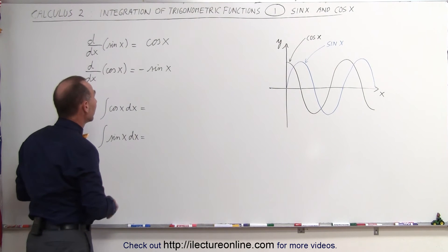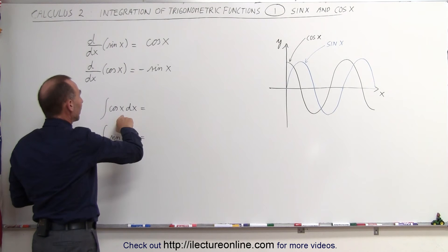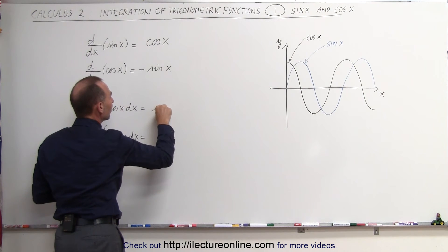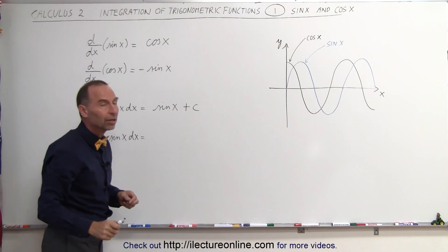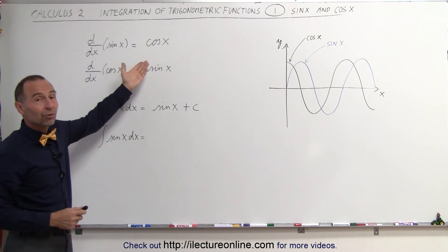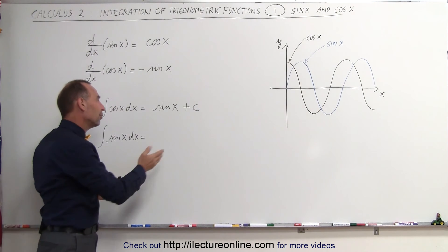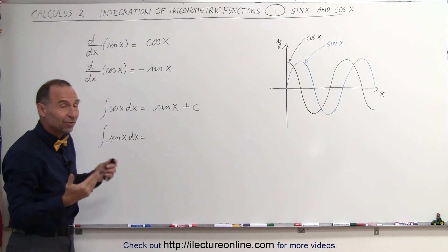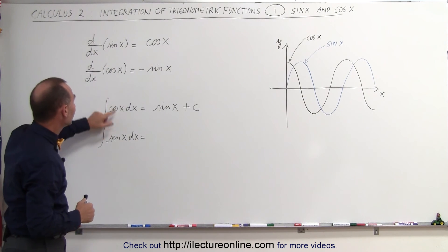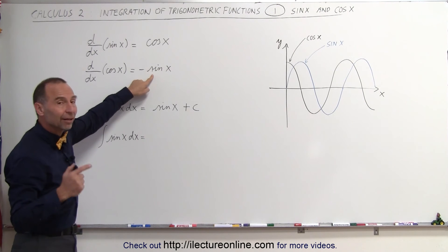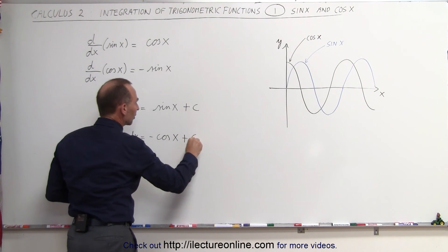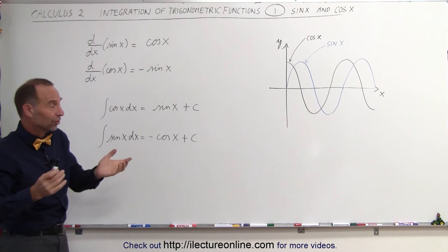If we then take the integral, we simply go backwards. If the derivative of the sine of x is equal to the cosine of x, the integral of the cosine of x must equal the sine of x. We should also add a constant of integration, because if we had the sine of x plus five, the five would drop off when differentiating and we'd have no visibility that a constant was there. So whenever we integrate, we must always include that constant. Similarly, since the derivative of the cosine of x gives us the negative sine, integrating the sine gives us the negative cosine of x, plus a constant of integration.